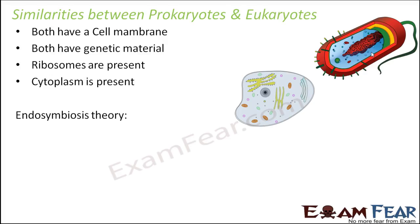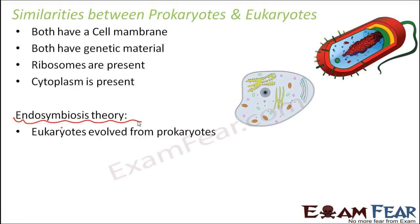So those were some of the similarities. Now there is a theory called the endosymbiosis theory. This theory says that eukaryotes evolved from prokaryotes. The complexity is greater in eukaryotes compared to prokaryotes — eukaryotes have more organelles, so the complexity is increasing, whereas prokaryotes are pretty simple. More complex things always evolve from simpler things.